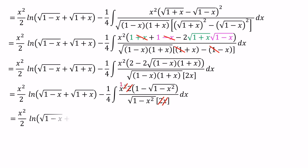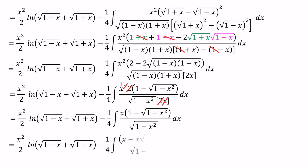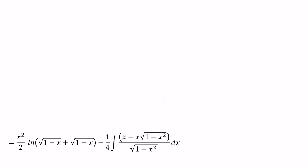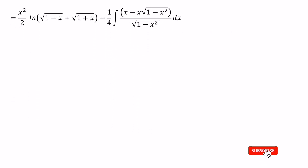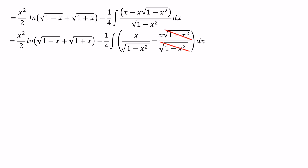Now we need to evaluate the integral of x times (1 minus √(1-x²)) over √(1-x²). We can remove the brackets in the numerator and get x minus x·√(1-x²). After that, we can divide these terms by the denominator √(1-x²), giving us x/√(1-x²) minus x·√(1-x²)/√(1-x²). We can cancel out √(1-x²) in the numerator and denominator.